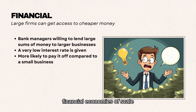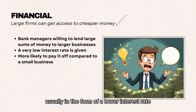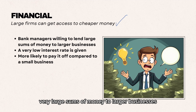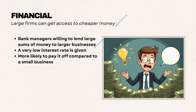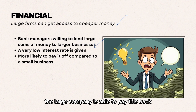Financial economies of scale is when large firms can get access to much cheaper money, usually in the form of a lower interest rate. Bank managers will be willing to lend very large sums of money to larger businesses, usually because they can trust them and trust that the large company is able to pay this back.